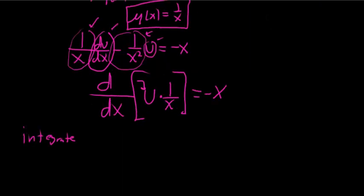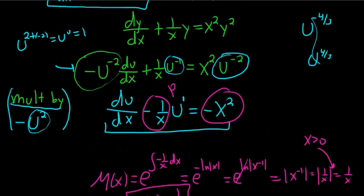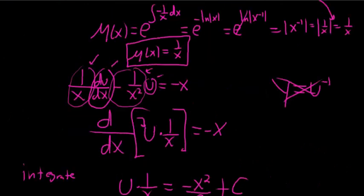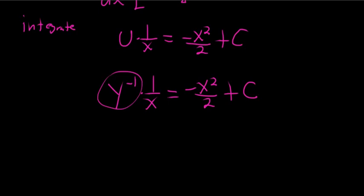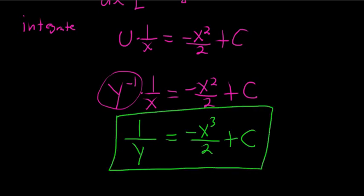We integrate both sides. The left side gives u times 1/x. Integrating the right hand side gives negative x squared over 2, and we add the constant C. Now u equals y to the negative 1, so substituting back: y to the negative 1 times 1/x equals negative x squared over 2 plus C. Multiplying by x and rewriting, our final answer is 1/y equals negative x cubed over 2 plus cx. That's the final answer.